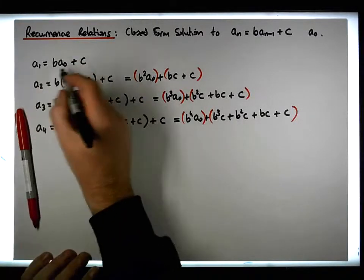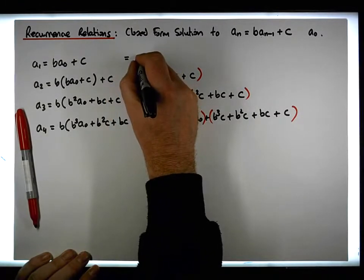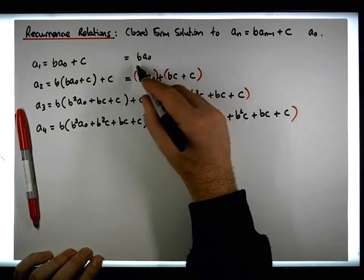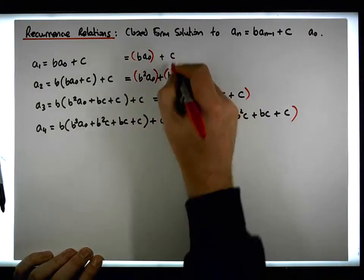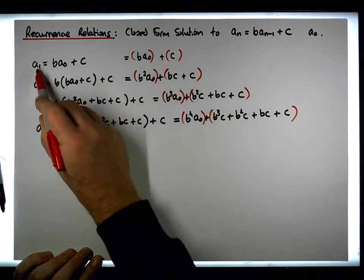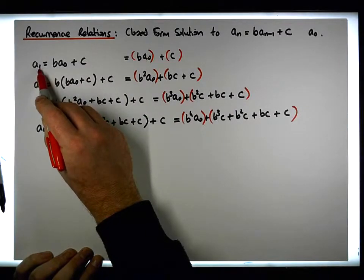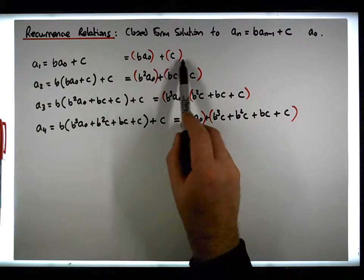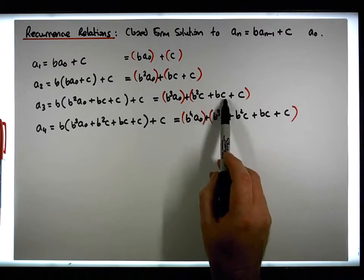We can take the a1 term and say that it's equal to b times a0, or more fully, b times a0 plus c. Breaking that up, you can see that we have a b to the 1 — which makes sense because it's the term at index 1 in the sequence. On the second grouping, you can see it's a c, then a bc plus c, then a b-squared c plus bc plus c.